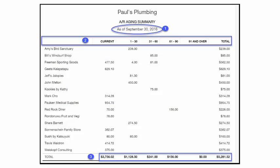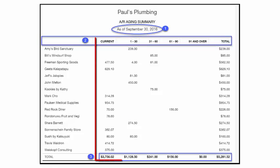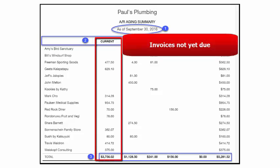Box number 2 shows the aging categories. This report is organized by customer, and then by 5 different aging buckets, starting with current, 1 to 30 days, 31 to 60 days, 61 to 90 days, and 91 and over. The current column indicates invoices that are not yet due. No action is required for invoices that appear in this column.